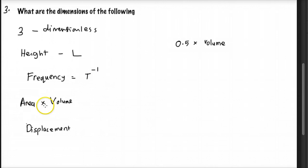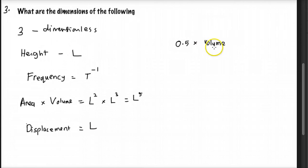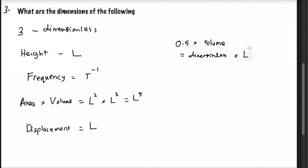Next is area times volume. Area is L², and volume is L³, so together this becomes L⁵. The next one is displacement, which is a length, so just L. The last one is volume times 0.5, which is half the volume. Since 0.5 is dimensionless and volume is L³, the result is dimensionless times L³, which is just L³.